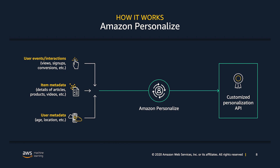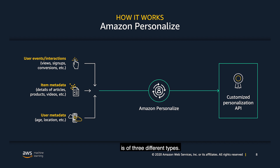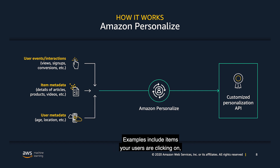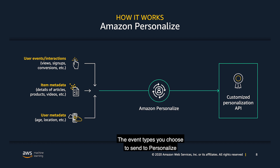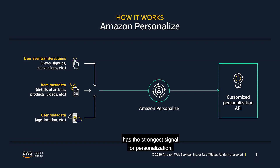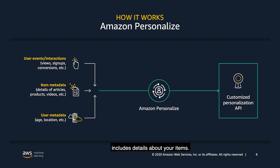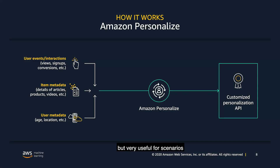So how does Amazon Personalize work? You start by providing data about your users and items to Personalize. The data used for modeling in Personalize is of three different types. The first is the activity of your users, also known as events. Examples include items your users are clicking on, purchasing, or watching. The event types you choose to send to Personalize will be dependent on your business and applications. This dataset type has the strongest signal for personalization and is the only one required by Personalize. The second dataset type includes details about your items — for example, their price point, category, style, or genre — essentially the information you already have in your catalog. This dataset is optional but very useful for scenarios such as cold starting recommendations for new items.